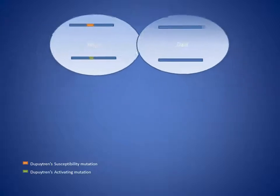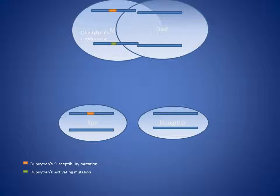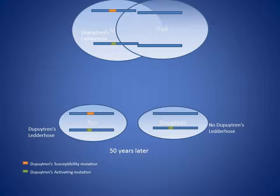The basic idea is that the mum will develop it. They have kids, and in this case the son may inherit the susceptibility gene, while the daughter won't. The son won't develop the disease at this point as he hasn't yet developed the activating mutation. Another factor about these diseases is that they often happen in the later stages of life — say 50 plus. Over time you increase the chances of developing this activating mutation. So say 50 years down the line, the son may get this mutation, and the daughter may also get this mutation. But as the son has the susceptibility mutation, he may then develop Dupuytren's and Ledderhose, whilst the daughter won't.